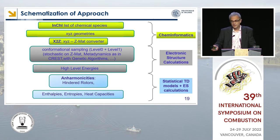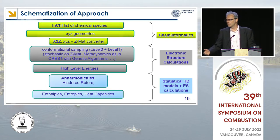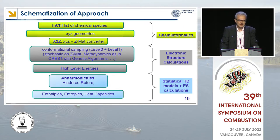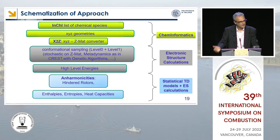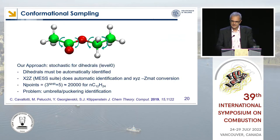After the cheminformatics step, you perform conformational sampling of all possible structures of your molecules — this is very important. You must know which is the lowest energy structure and what possible isomers have similar energy, so sampling the potential energy surface at the beginning is critical. Then you determine energies at a proper level of theory — what we call high-level energies — followed by corrections for anharmonicities if you want to determine proper thermochemical parameters, and then finally you can determine enthalpies, entropies, and heat capacities.